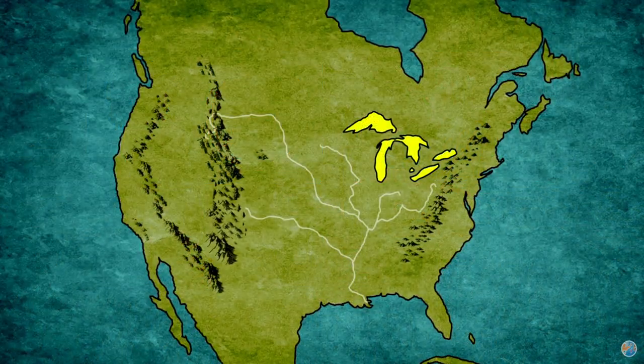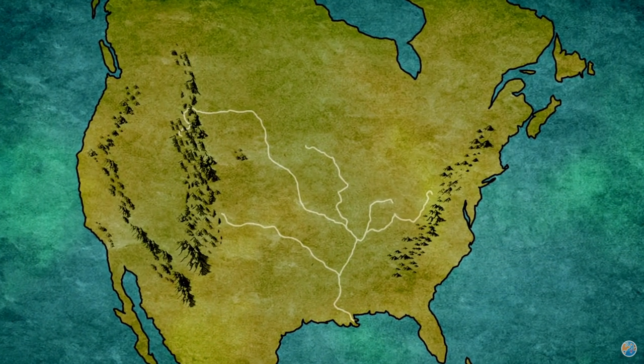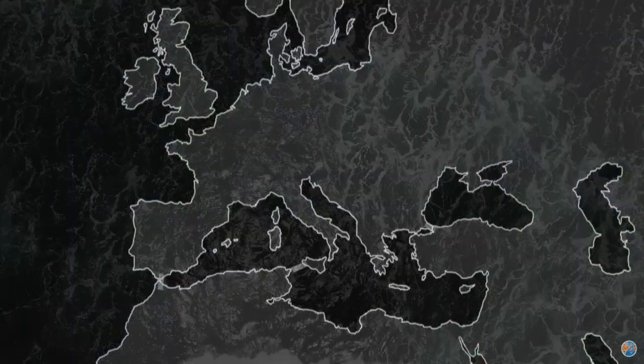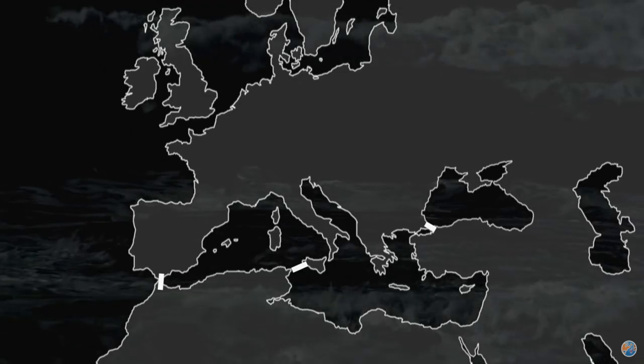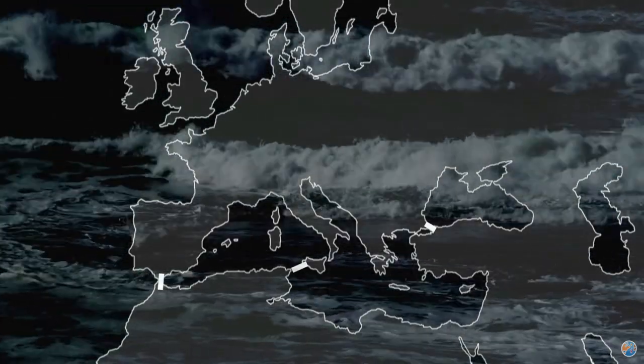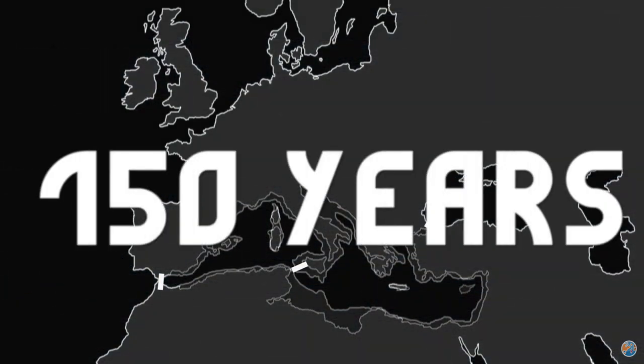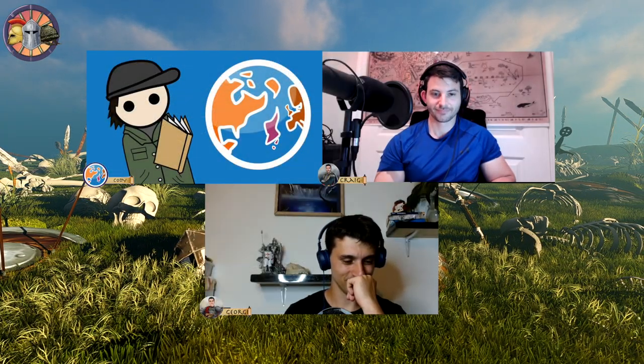Geography affects our climate, the food we grow, how cultures spread, how people develop, how civilizations develop. Simply removing or changing a lake can change an entire culture. Remove the Mediterranean and you basically wipe out all of Europe. Change the Sahara to green and you have a whole expanse of grassland. Disconnect the Americas and remove Panama, and you change the interchange of animals and the spread of biodiversity. Geography changing affects everything — it's the most global effect you can do.